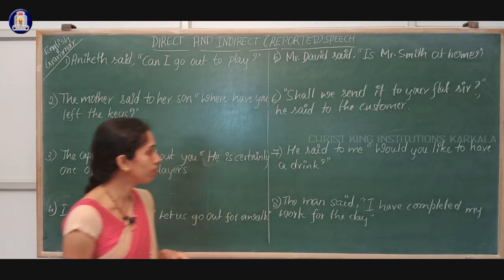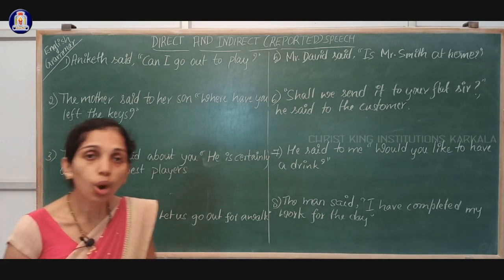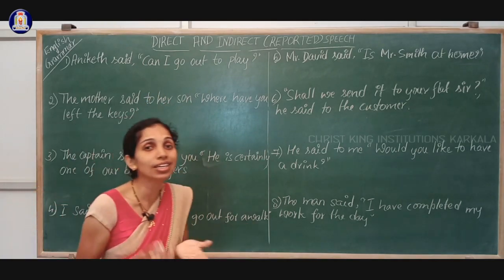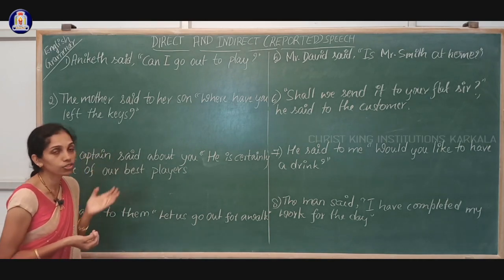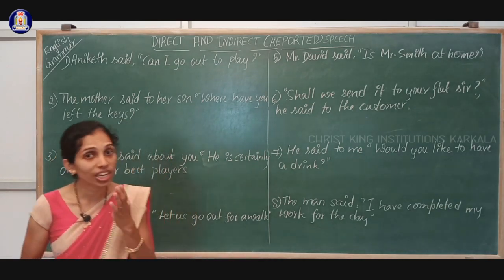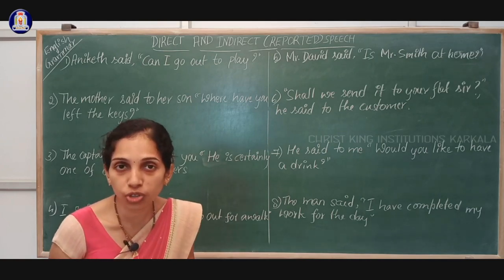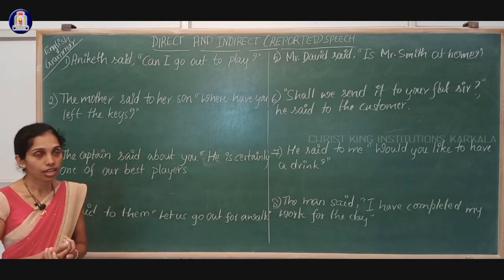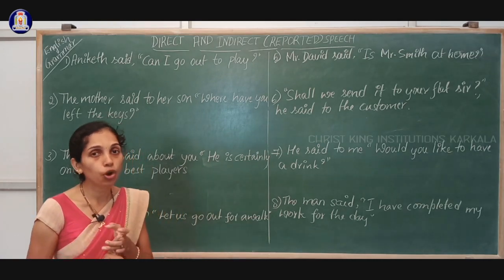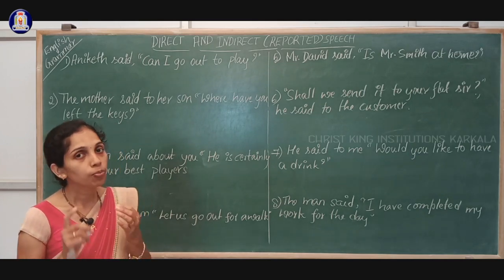Let me answer it one by one. The first question is: Aniket said, 'Can I go out to play?' Dear students, what kind of sentence is this? Of course it is an interrogative sentence. And in interrogative sentences, what type of question is this? 'Can I go out to play?' — you will get a yes or no response. So it is a yes or no question, and since it is a question, which reported verb do we use? We have to use 'questioned' or 'asked'. And since it is a yes or no question, what linker do we use? We have to use either 'if' or 'whether' as the linker. Then we have to change the tense and the pronouns.